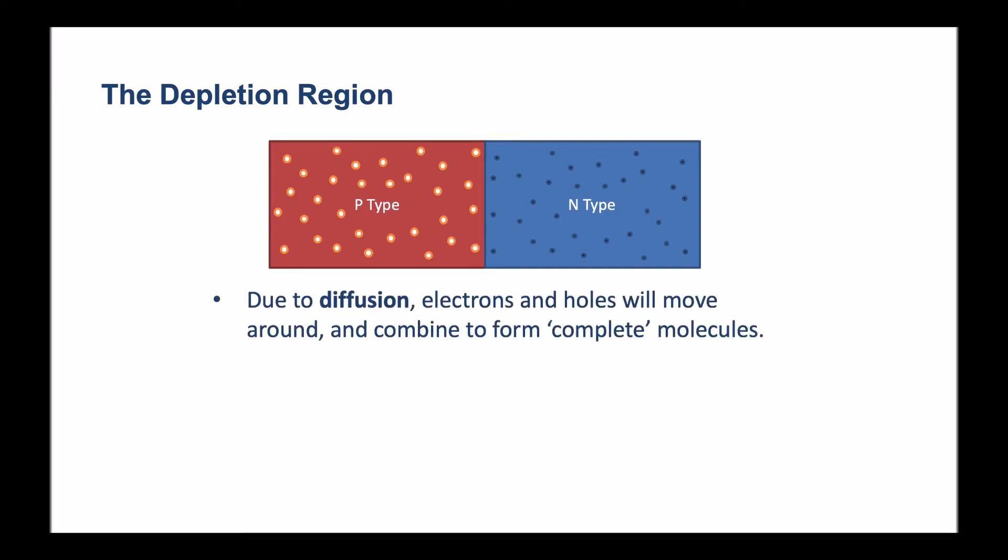Due to diffusion, electrons and holes will move around. We said before that this is linked to temperature, so the electrons are always vibrating and moving to form one structure, breaking structure and then forming another. And so electrons and holes will move around and combine to form complete molecules.